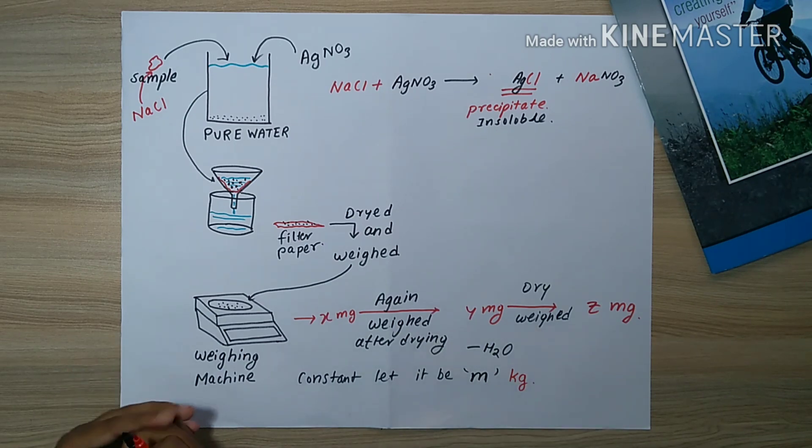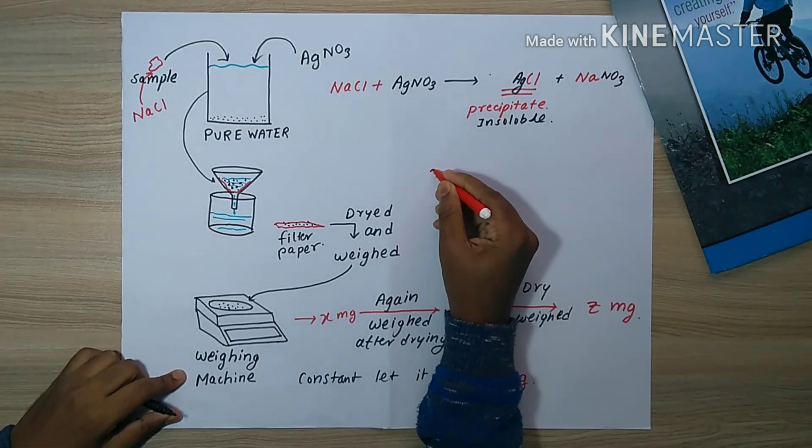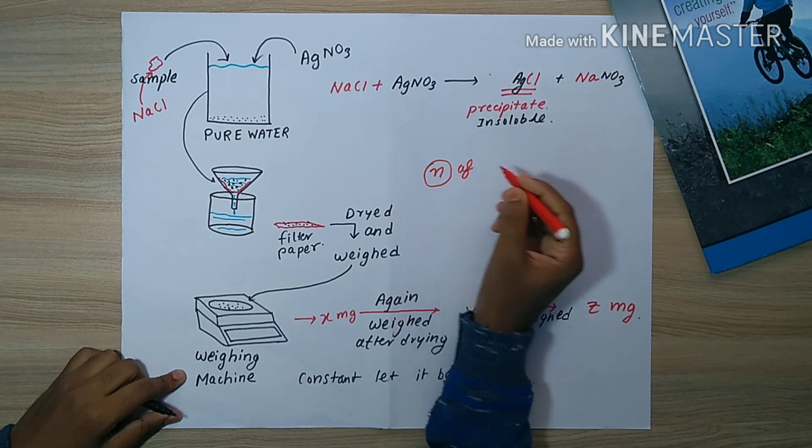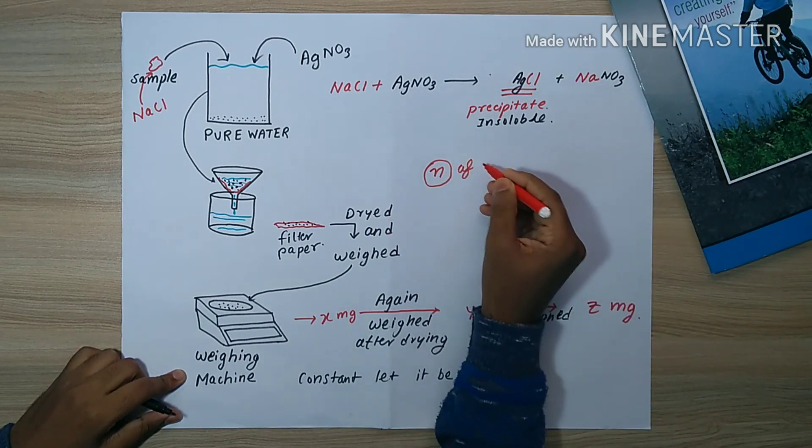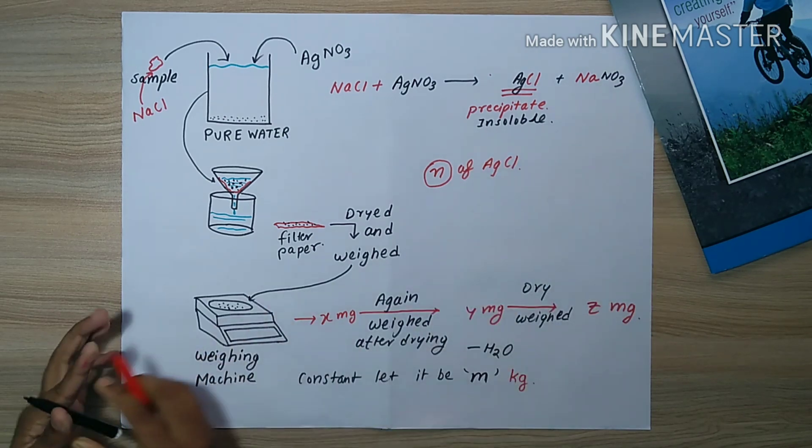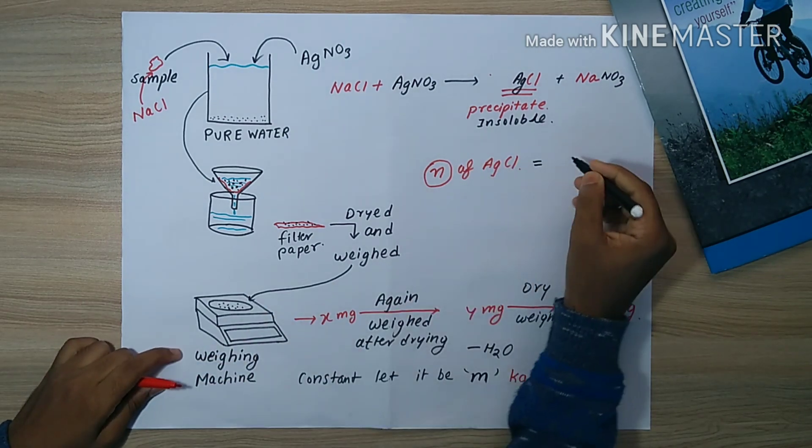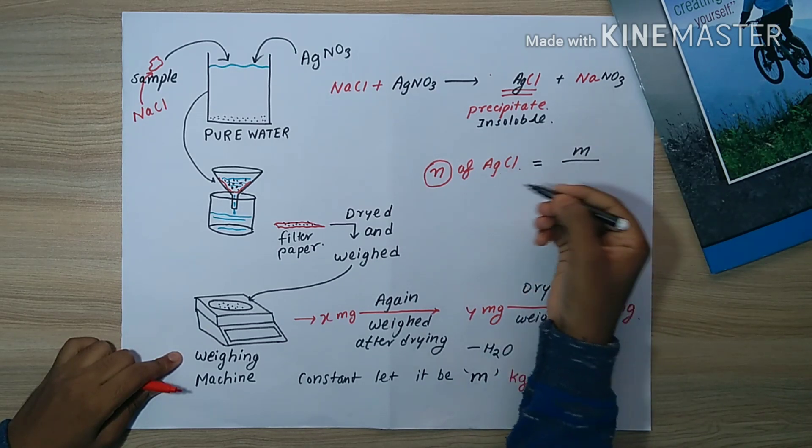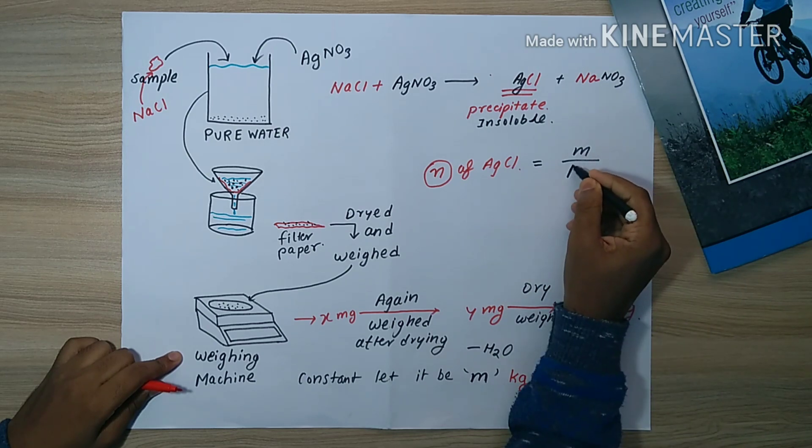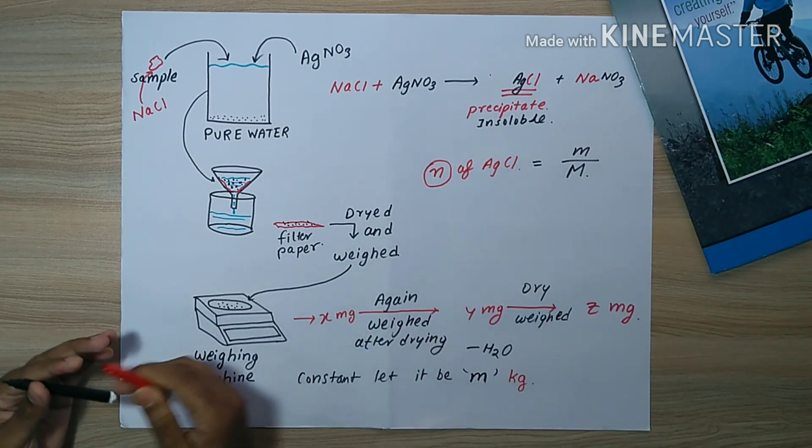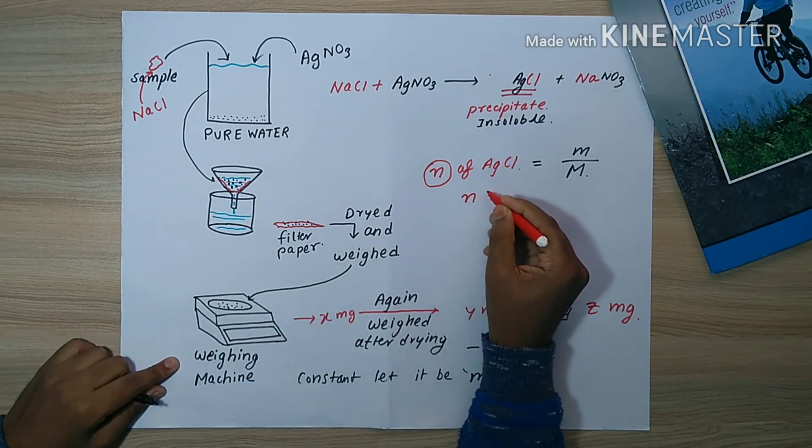When the constant mass is attained, we have to get the number of moles of the precipitate AgCl. We already know the molecular mass of AgCl and we also know the weight of AgCl that has become constant. The constant weight is divided by molecular mass and we get the moles of AgCl.